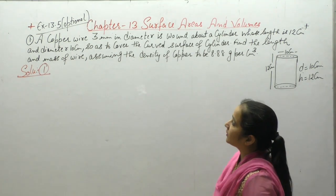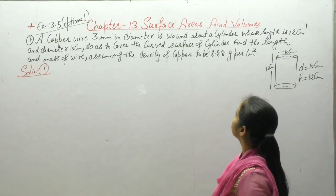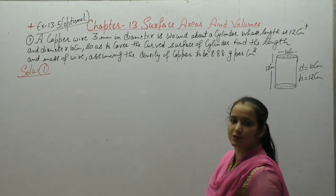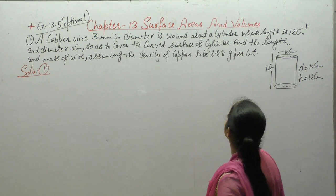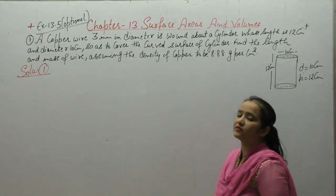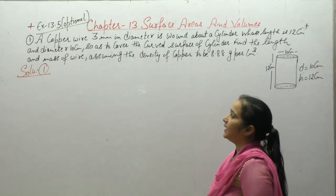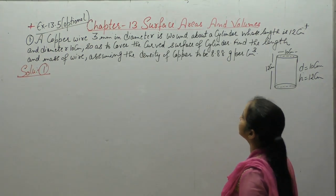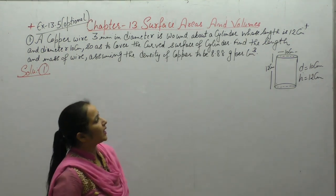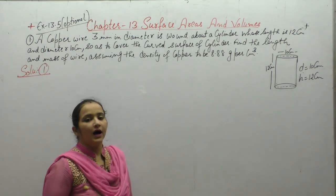A copper wire 3mm in diameter is wound about a cylinder whose length is 12cm and diameter is 10cm so as to cover the curved surface of the cylinder. Find the length and mass of wire assuming the density of copper to be 8.88 grams per centimeter cube.